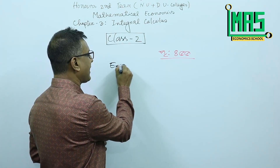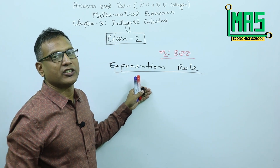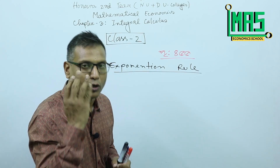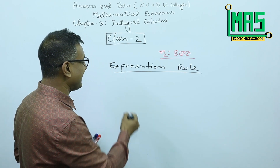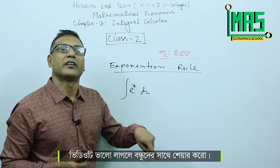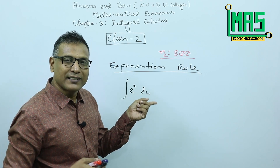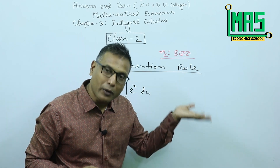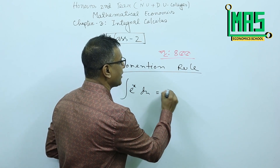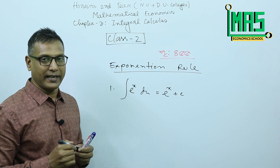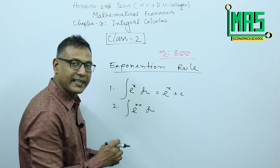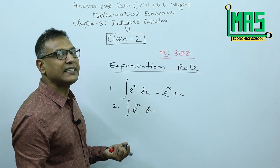Now we will cover the exponential rule. We will note this particular group. Integration of e to the power kx dx and a to the power kx. K, A, B, C — these are constants which are the same.